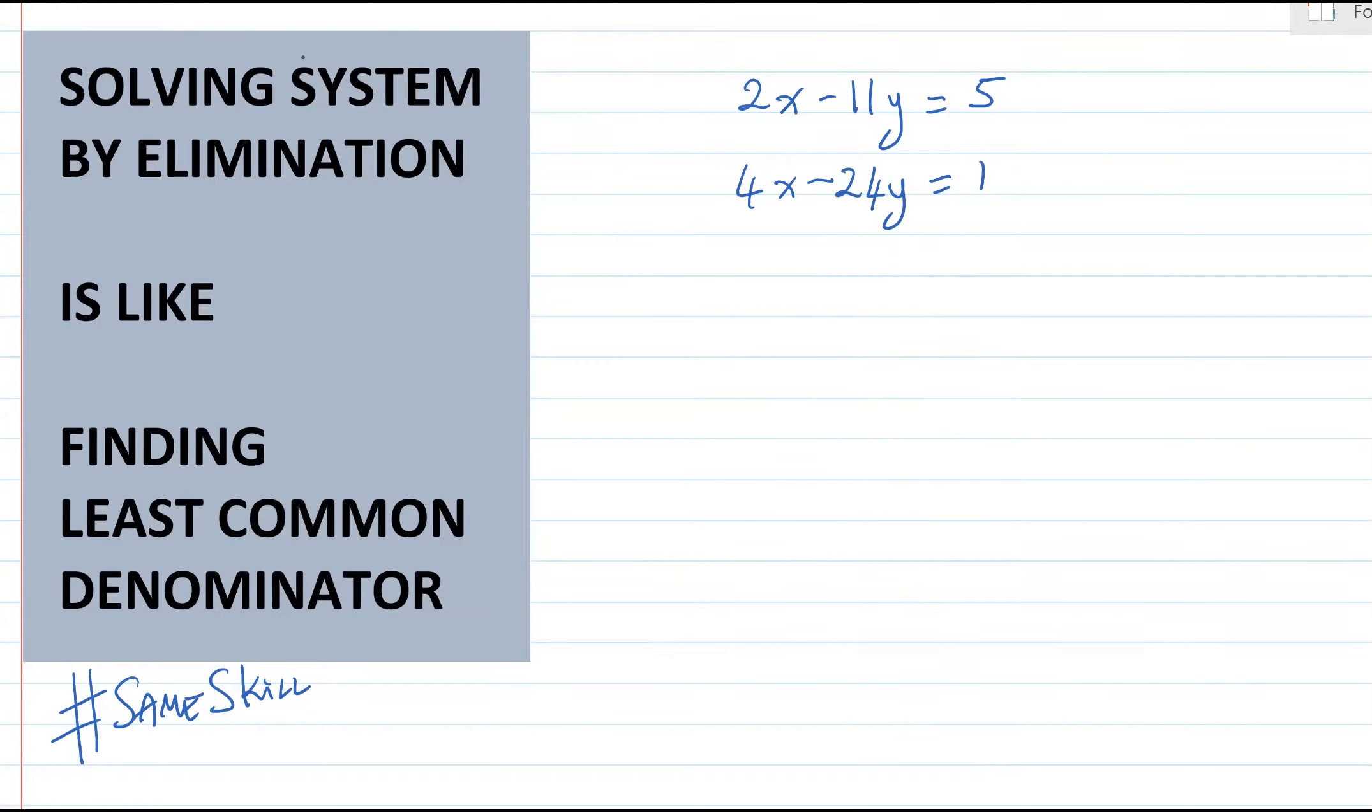Now what if we have these equations instead? We see 6x and 8x. It's not very obvious what we should do with them. This is where I say you should think of it like doing a least common denominator problem.